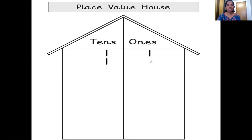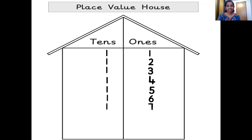One tens, three ones — thirteen. One tens, four ones — fourteen. One tens, five ones — fifteen. One tens, six ones — sixteen. One tens, seven ones — seventeen. One tens, eight ones — eighteen. One tens, nine ones — nineteen.